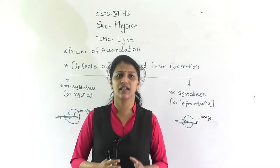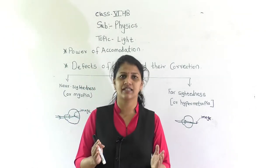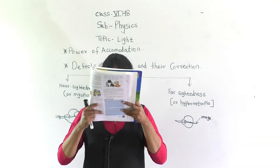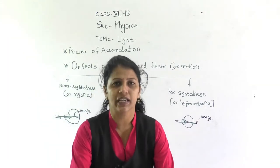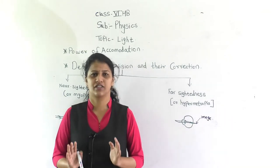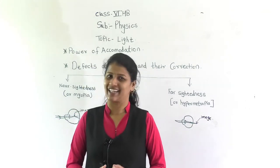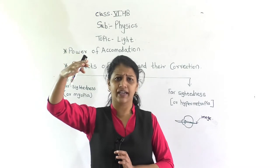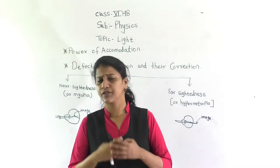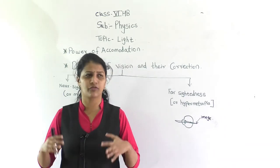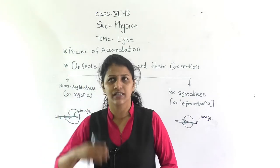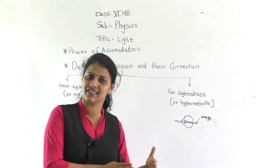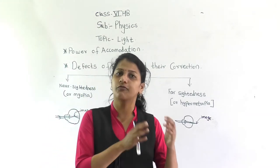The minimum distance at which we can see clearly is 25 centimeters. If you hold your textbook closer than 25 centimeters from your eye, you are not able to see it properly. If the minimum distance between your eye and the book is 25 centimeters, then we can see properly — that is the nearby distance. And the far distance we can see is infinite. If you are standing outside and looking at the sky, that distance is infinite — that is called the far distance.